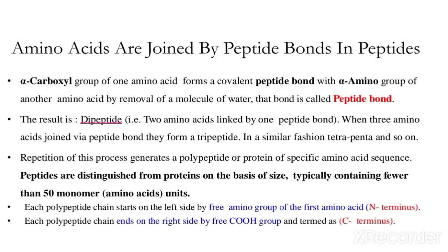In proteins, different amino acids in the form of monomers are arranged in a sequence and form a complex protein structure. The bonding that occurs there is called peptide bonding. In peptide bond formation, one amino acid's alpha-carboxyl group (the acidic group) and the other amino acid's alpha-amino group come together. The alpha carbon is the central carbon, and the groups directly attached to it are called alpha groups.